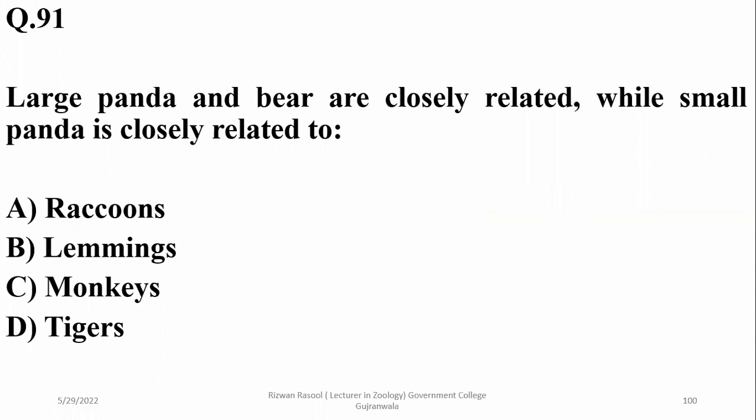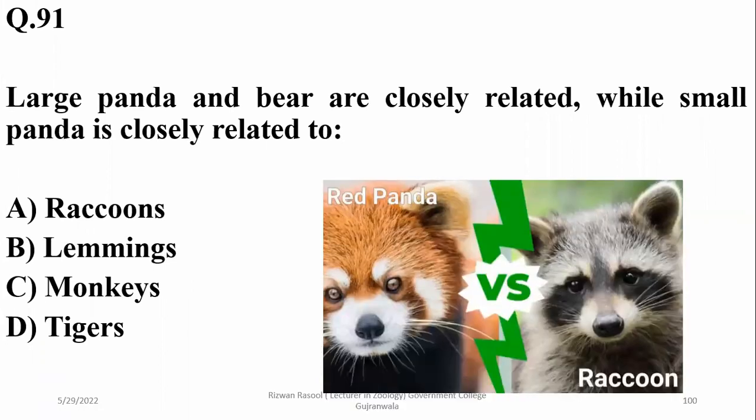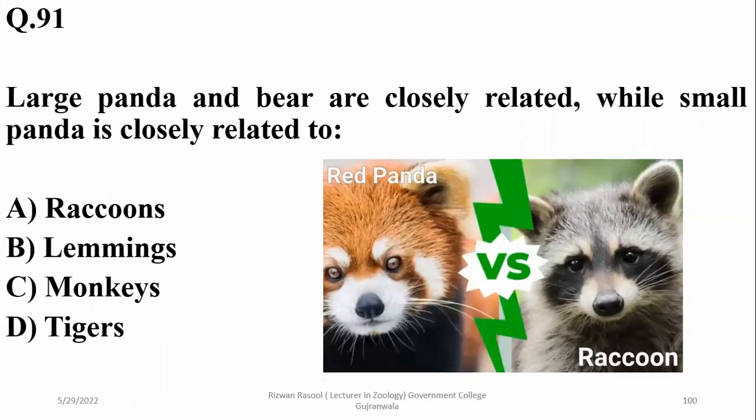Energy is not recycled in this way, so right option is beta — energy. Question 91: Large panda and bear are closely related; in the same way, small panda is closely related to raccoons, as they are quite similar in their morphological features. Right option is alpha.